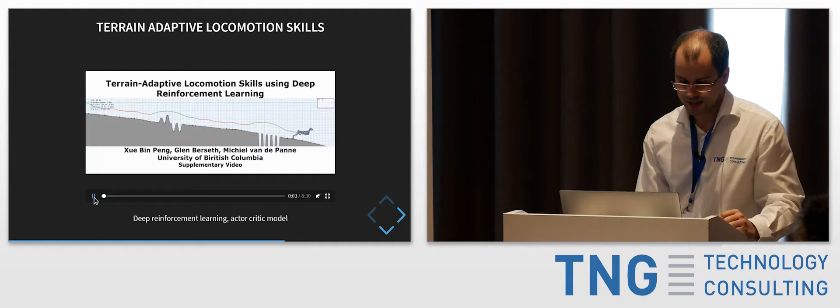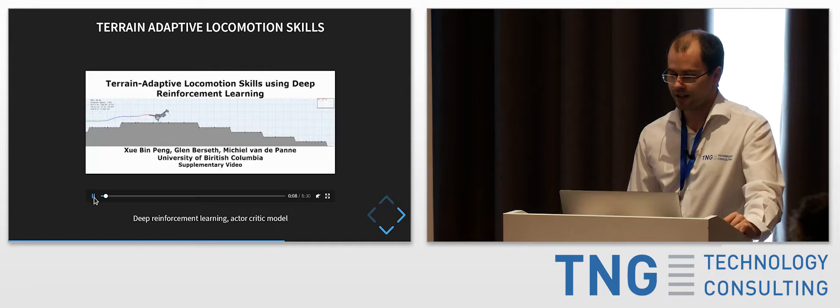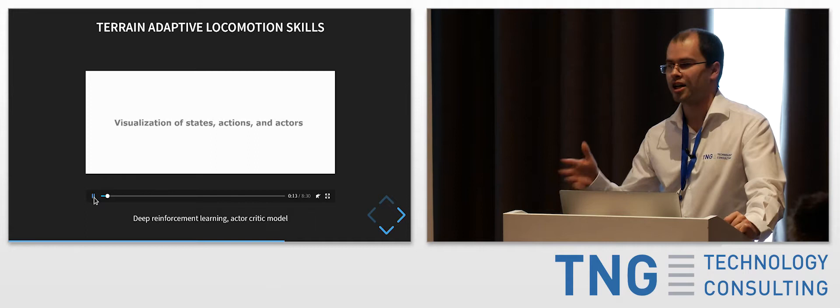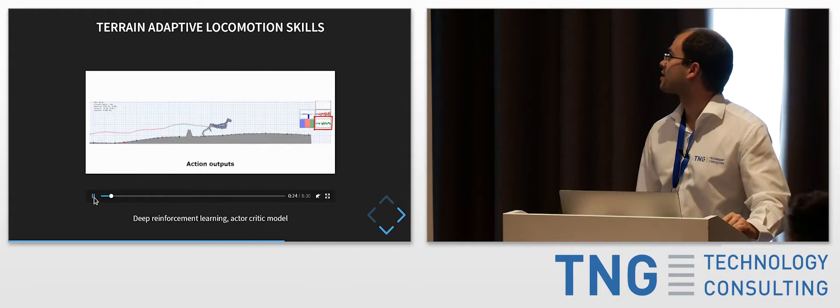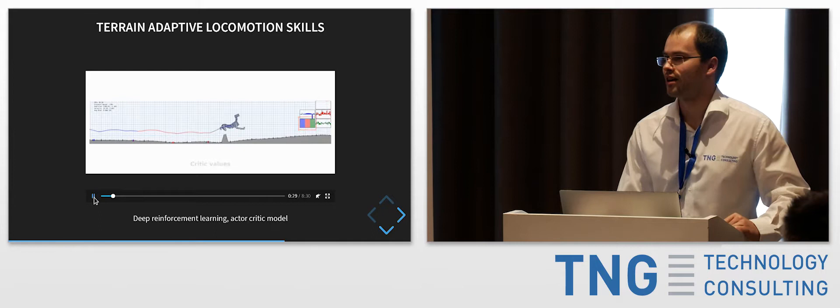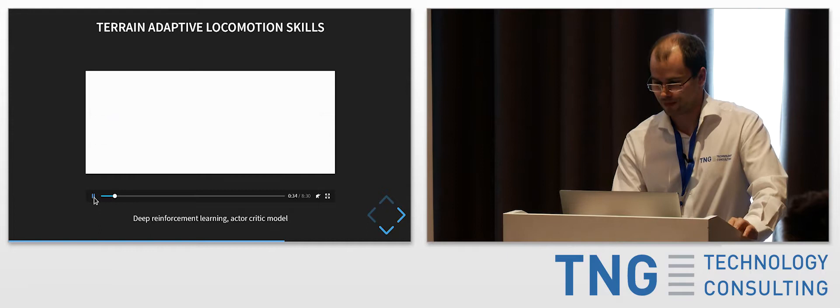Terrain adaptive locomotion skills use a deep reinforcement learning method employing an actor-critic model. The actor decides which actions to take, and the critic evaluates whether the action is good or not. As shown with a dog model with 21 limbs, the whole body movement is impressive and looks quite realistic.